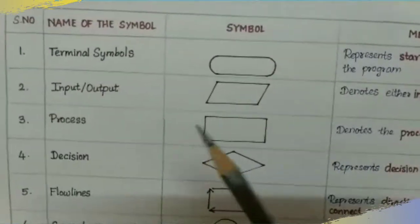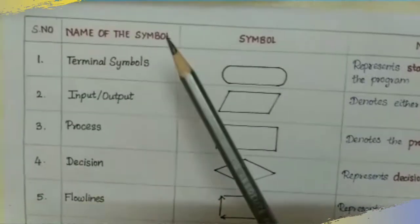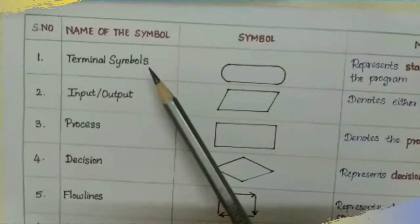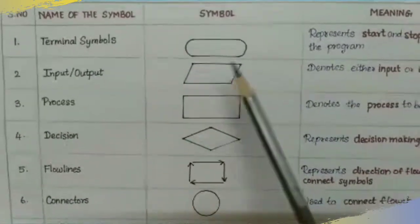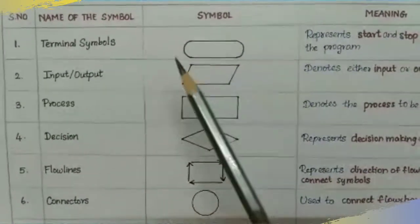The first symbol is the terminal symbol. The terminal symbol is an oval-shaped symbol.